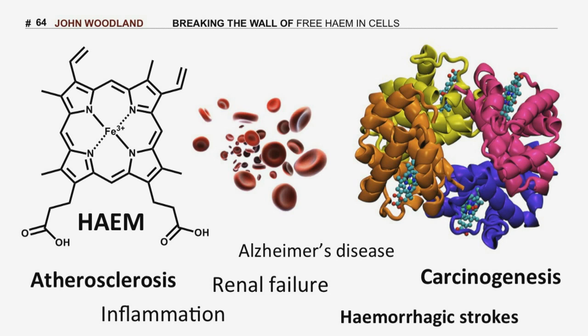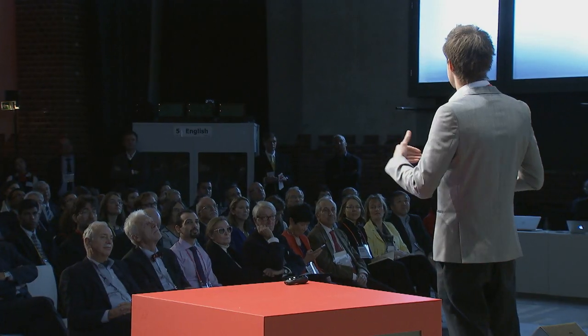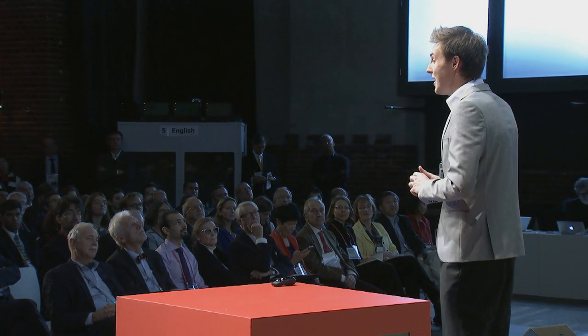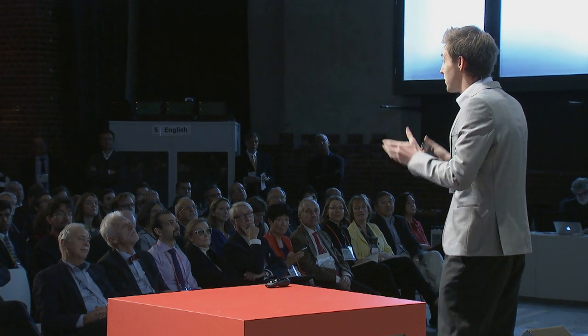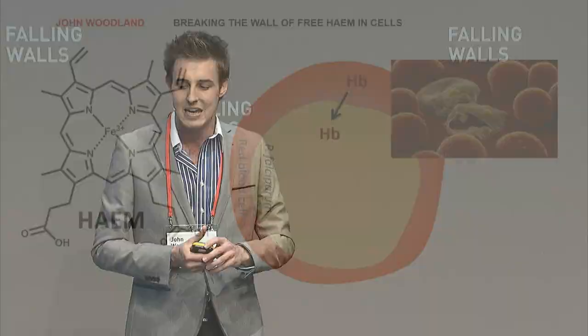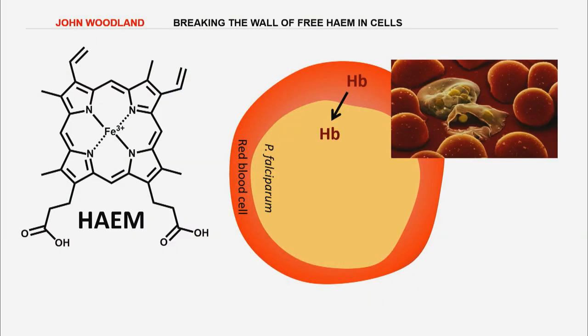But the most striking form of free heme toxicity occurs in malaria. You don't need me to remind you just what a devastating disease malaria is, particularly in sub-Saharan Africa where I'm from. Over the three minutes I'll be talking to you now, no fewer than nine people will have died from the disease. When the malaria parasite invades your red blood cells, it takes up the hemoglobin.